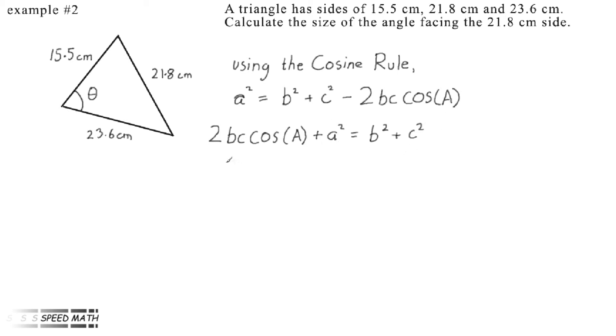Now, if we take a² to the right-hand side and change its sign, we get 2bc cos(A) equals b² plus c² minus a². Now, all that needs to be done to have cos(A) on its own is to divide both sides by 2bc, and 2bc cancels on the left. So we have cos(A) equals (b² + c² - a²) / 2bc.